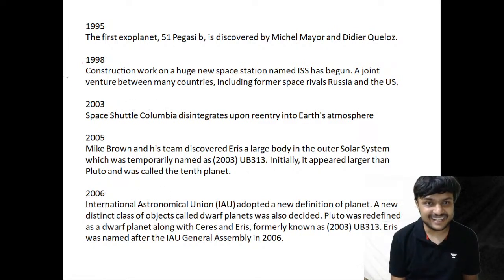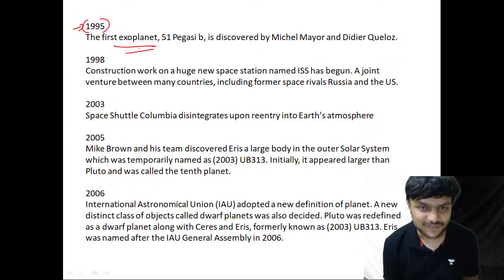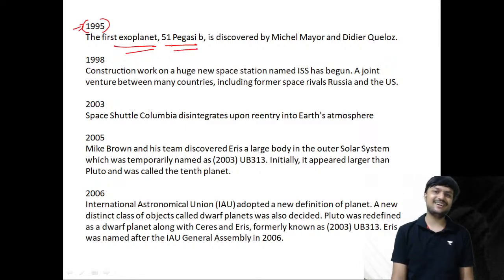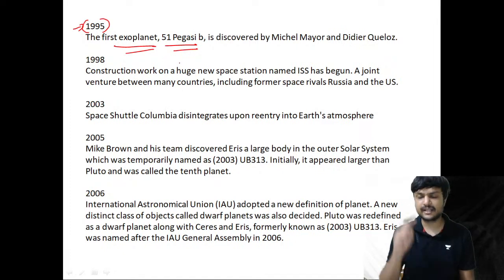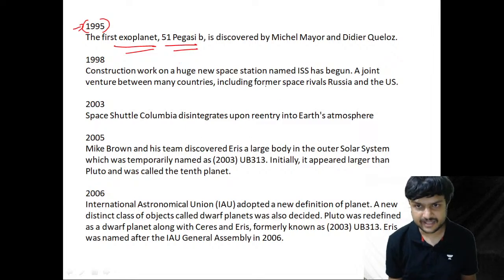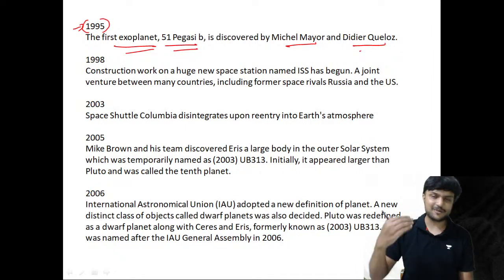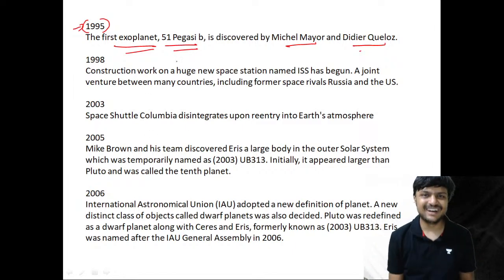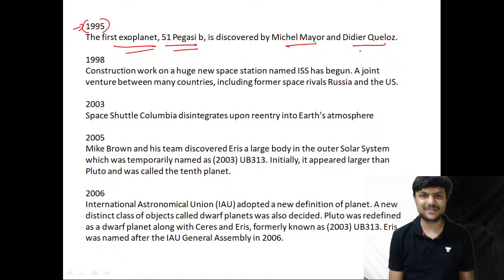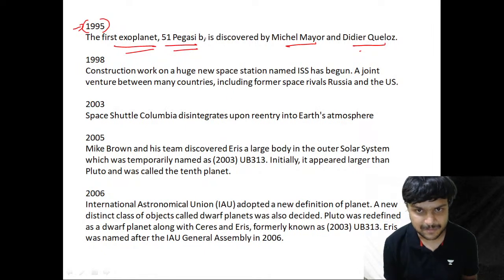In 1995, the first exoplanet was discovered around a star called 51 Pegasi — the exoplanet is named 51 Pegasi b, using the a, b, c, d nomenclature for exoplanet orbits. It was discovered by Michel Mayor and Didier Queloz — a professor and student — who won the Nobel Prize for this discovery.